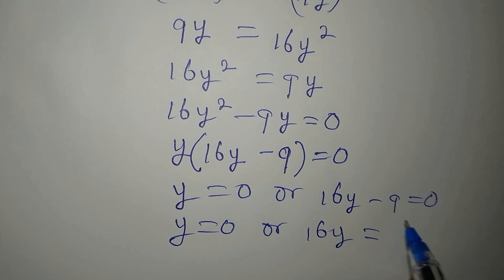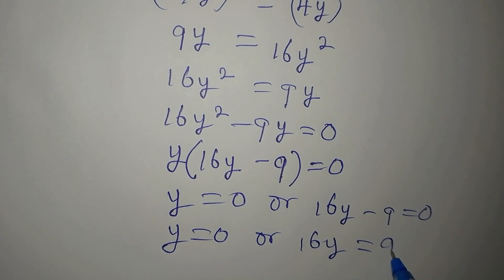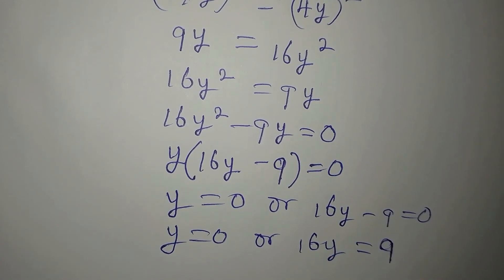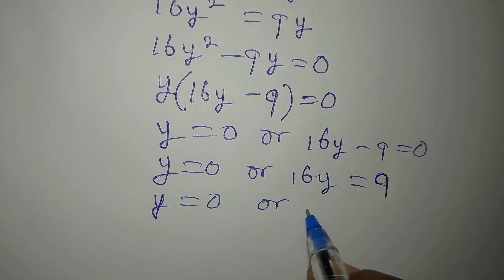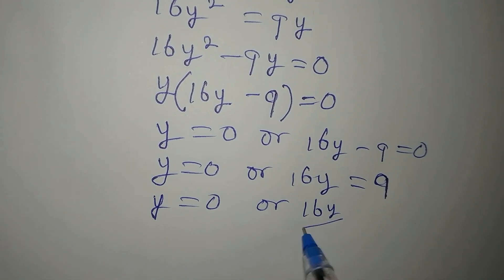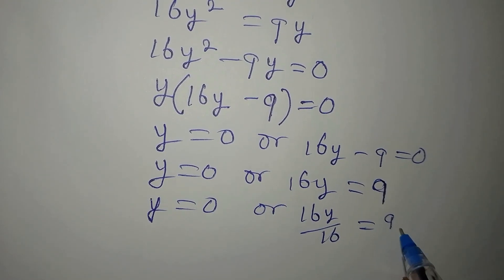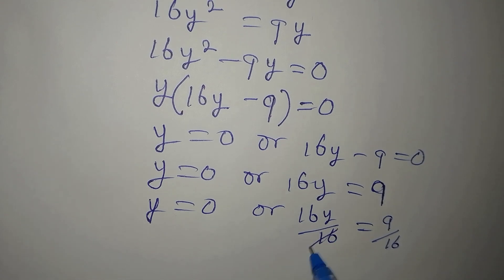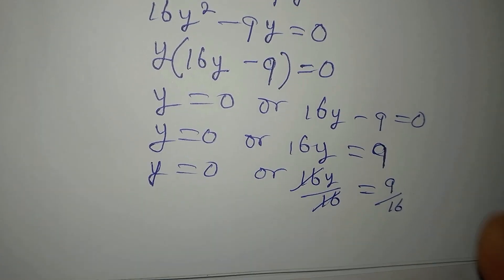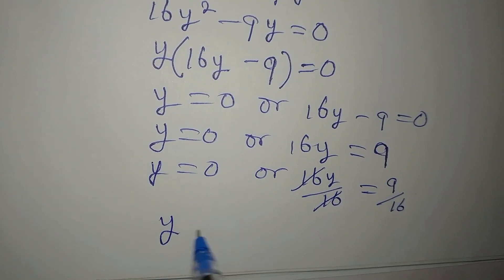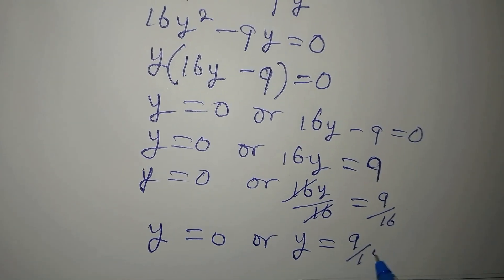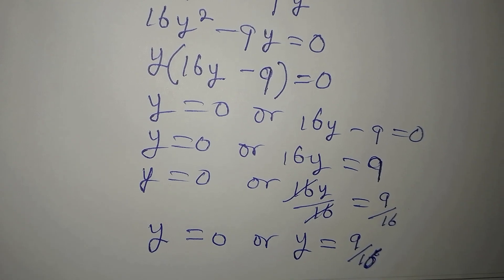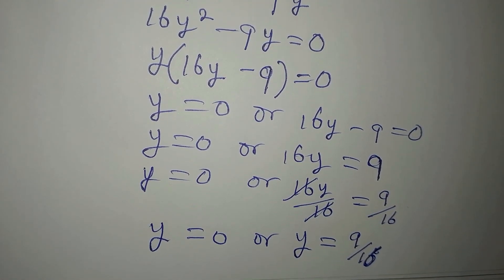From the second factor, 16y equals 9, so y equals 9 over 16, since dividing both sides by 16 gives us that result. So our two values of y are y equals 0 or y equals 9 over 16.